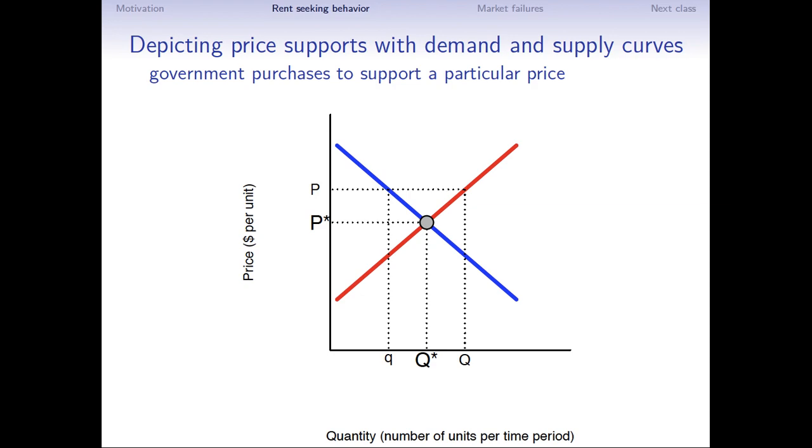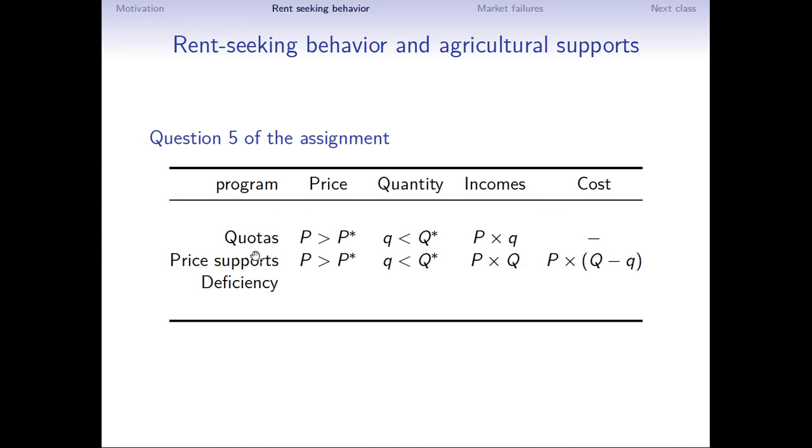And so what does the government do with its commodities? Well, sometimes these commodities get dumped into other economies. Sometimes these goods get dumped onto other economies through foreign aid. So rice and sugar and other commodities that are produced in the United States often get shunted to other markets. It means a good deal of cost for the government. And so you can see in this scenario, there's an incentive to get this quantity purchased off the market, out of the market, away somewhere else.